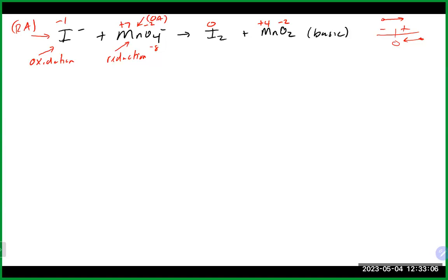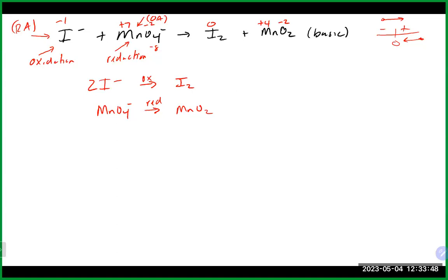Split into half reactions: I⁻ → I₂ (oxidation) and MnO₄⁻ → MnO₂ (reduction). Balance elements except O and H: put a 2 in front of I⁻ to get 2I⁻ → I₂. Manganese is already balanced. For oxygen: no oxygen in the iodine half reaction; in the manganese half reaction there are 4 oxygens left and 2 right, so add 2 H₂O to the right and 4 H⁺ to the left.